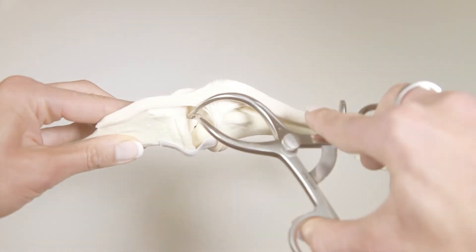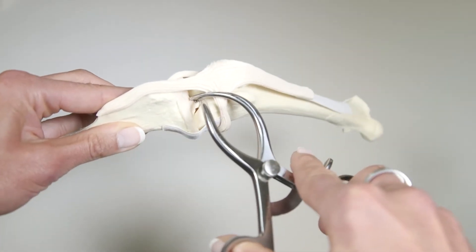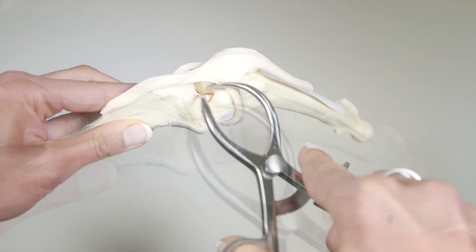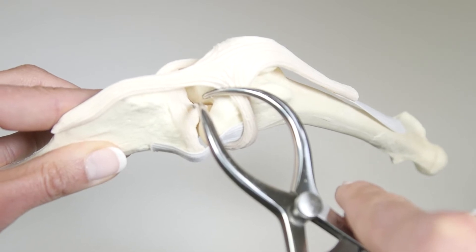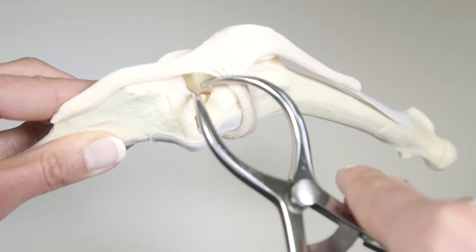Correct positioning of the device involves placement of one tip on the intercondylar notch and the other tip on the tibial plateau. Both tips should avoid the articular cartilage.